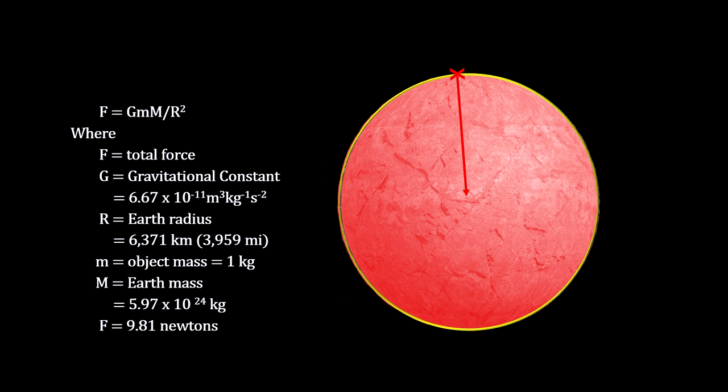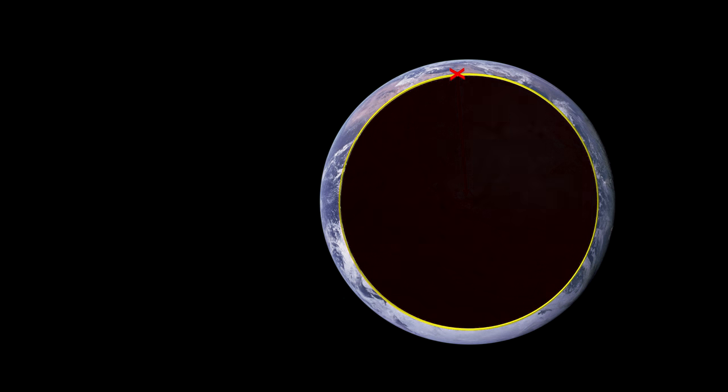We see that although the object is closer to the center, the overall force is just a little bit less due to the smaller mass. But what about all the matter in the Earth's crust that is now further away from the center than the object?